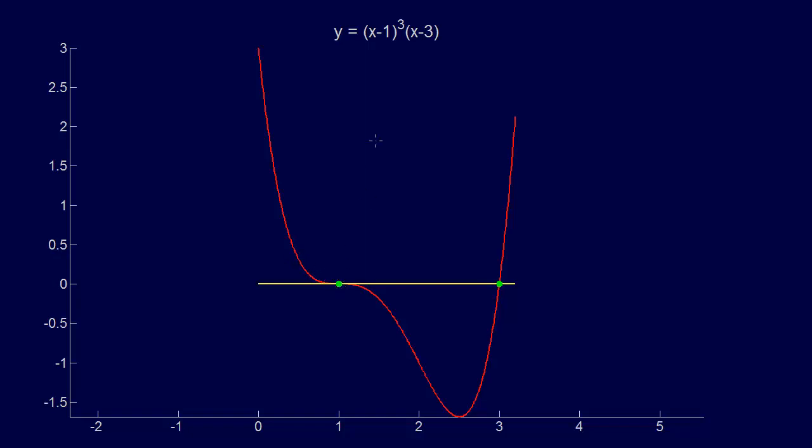So we have the derivative going to zero, and that's a triple root, and then we also have another root here.